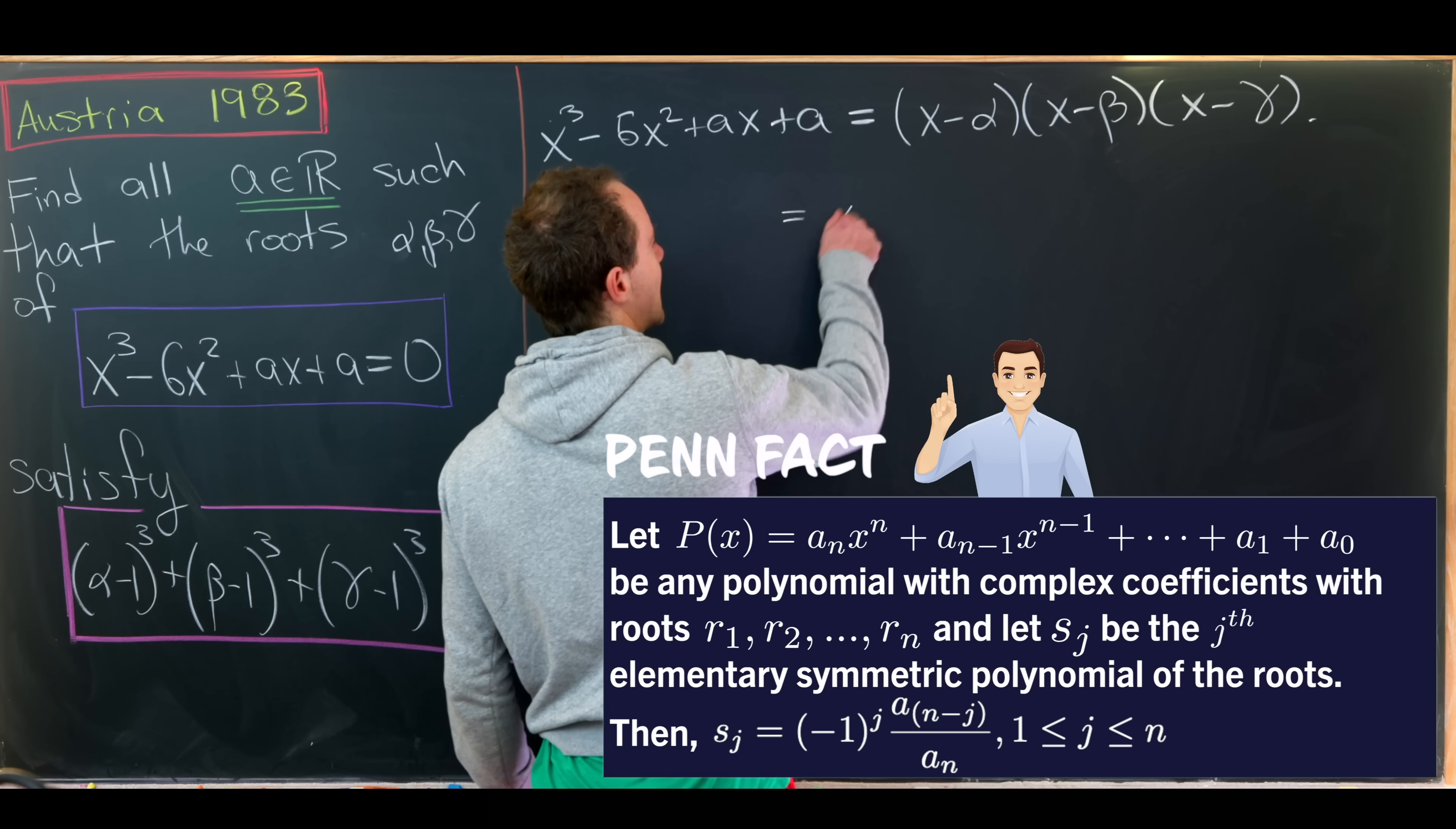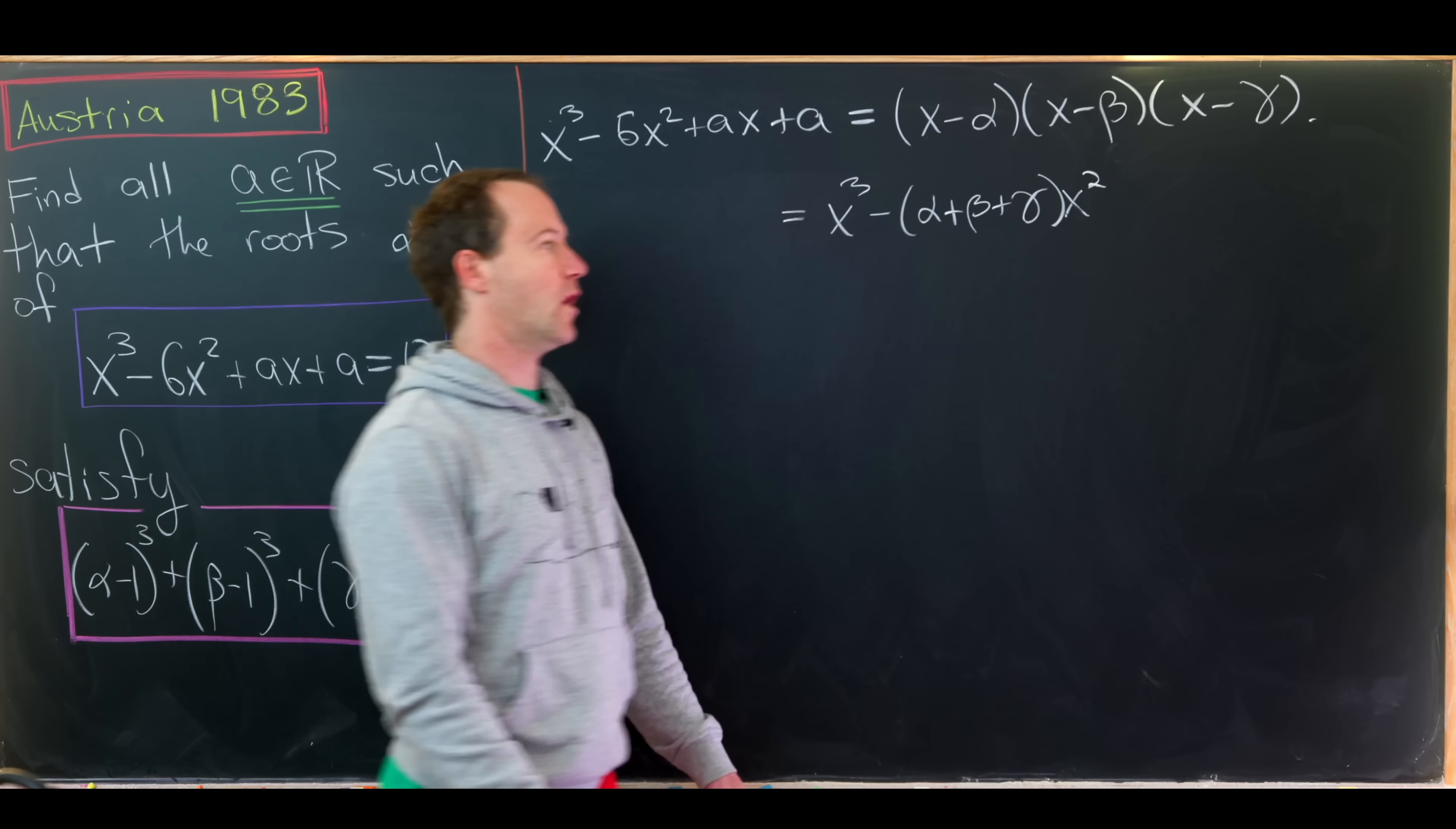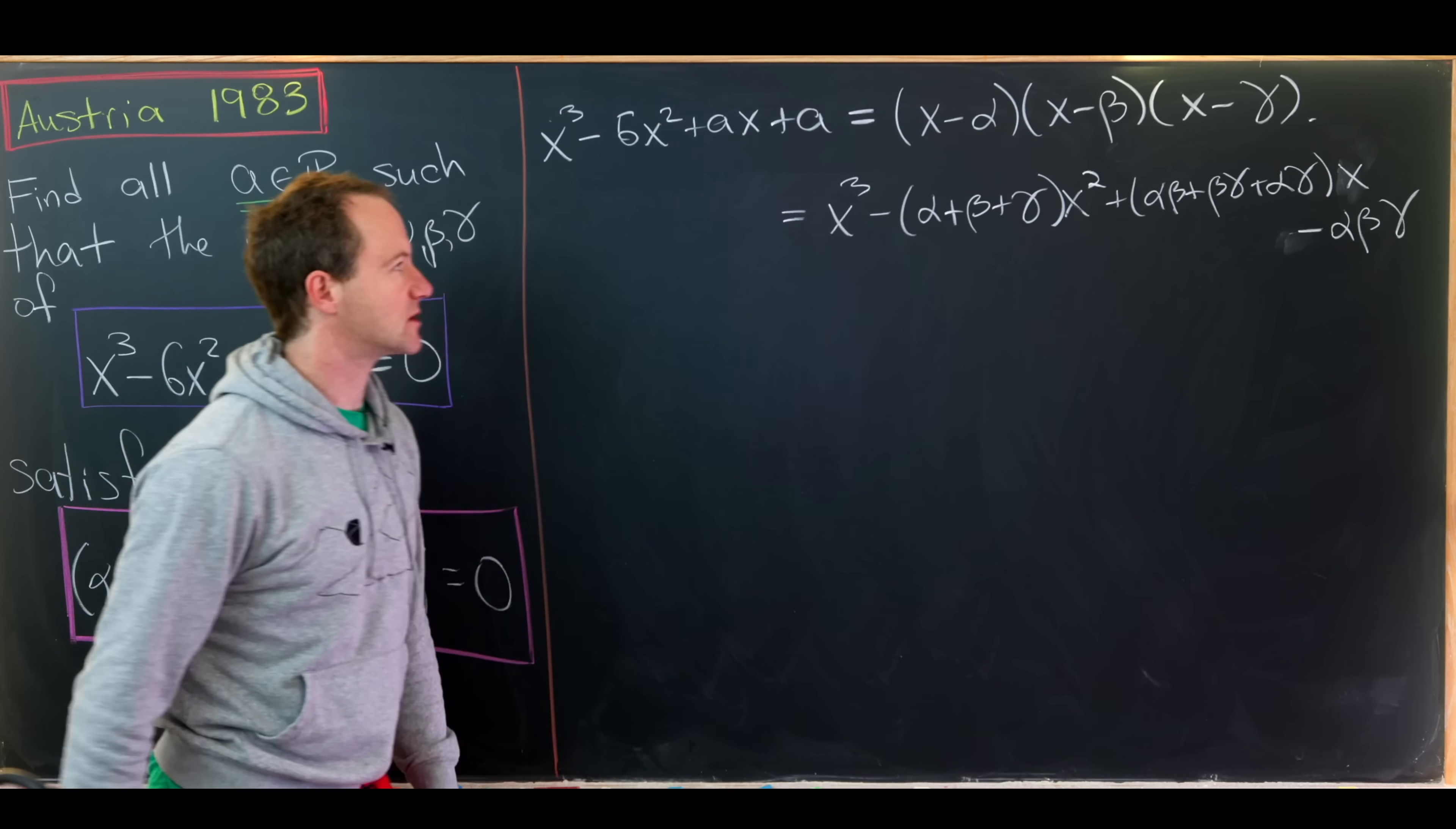Multiplying this out will give us x cubed, that's taking x times x times x. And then next, we'll have minus the sum of alpha, beta, and gamma times x squared. That's from choosing two x's and one number as we multiply that out. And then next, we'll have plus alpha beta plus beta gamma plus alpha gamma times x. And then finally, minus alpha beta gamma from the constant term.